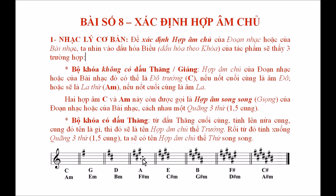Nếu có ba dấu thăng, thì dấu thăng cuối cùng là son thăng, tính lên nửa cung sẽ là la, cho chúng ta giọng la trưởng hoặc pha thăng thứ. Bốn dấu thăng sẽ là mi trưởng hoặc đô thăng thứ, và cứ tiếp tục như thế.